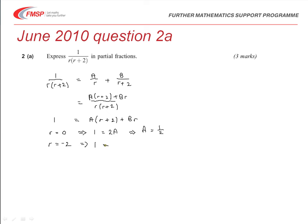And so that's going to imply that 1 is equal to, and now we know this bracket is 0, and r is negative 2, so we've just got negative 2b. And so that will imply that b is negative 1 half.